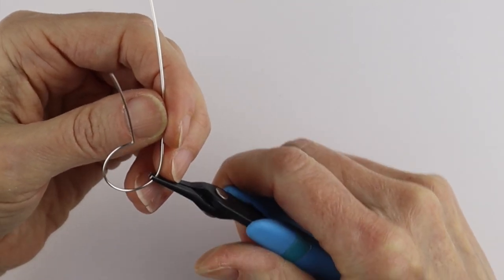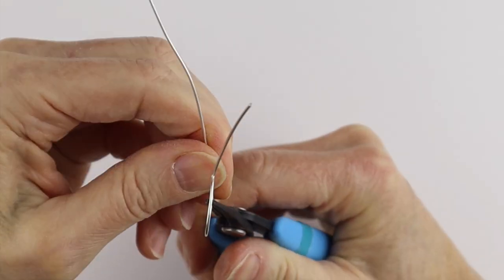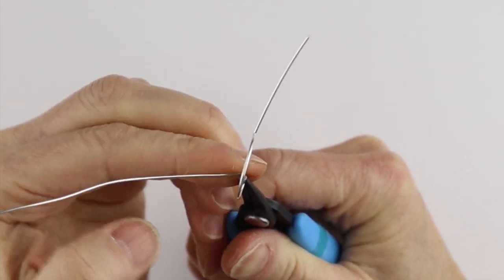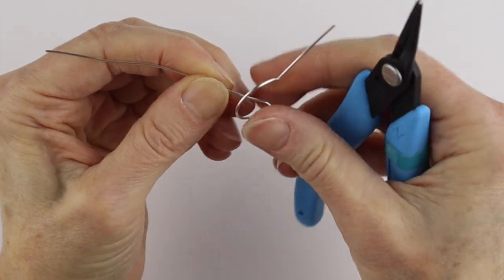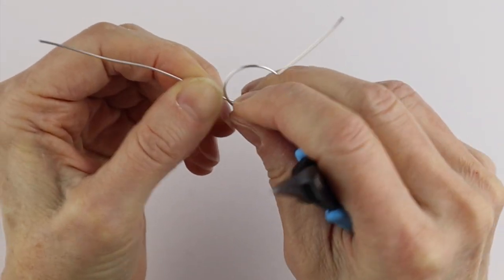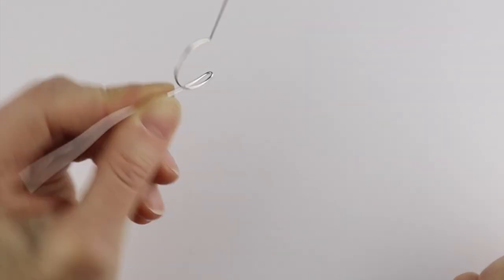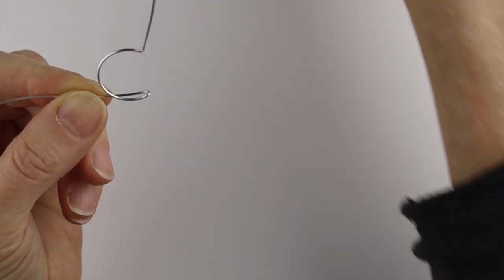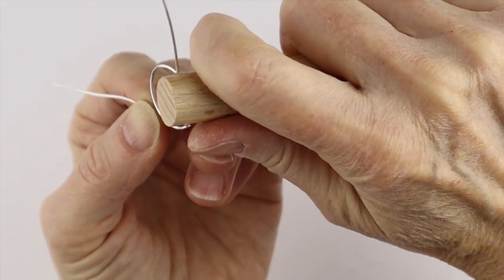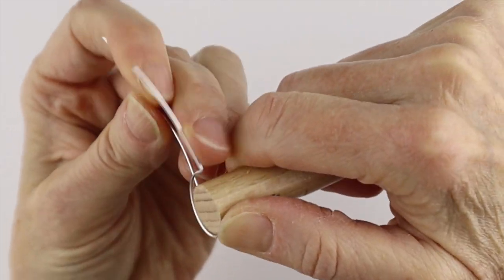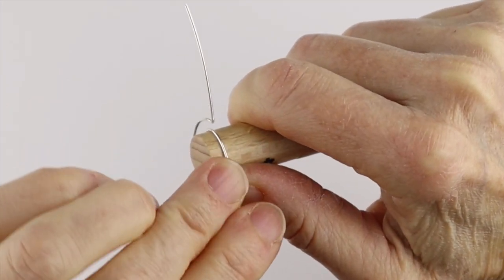And then what you want to do is just hold this in the place that you want and bend it to the back. Just hold this and I'll show you on the side. Just bend this to the back and same push with your finger to make a nice sharp crease and then just push it in. So this is what you have here.